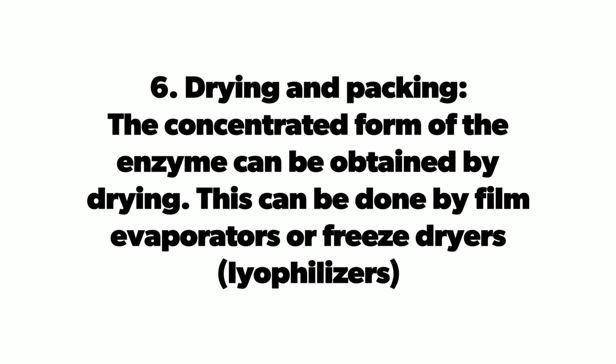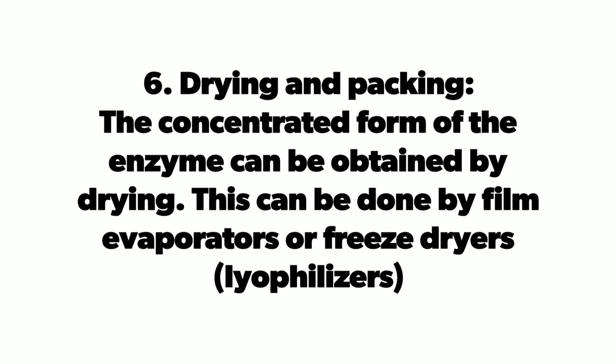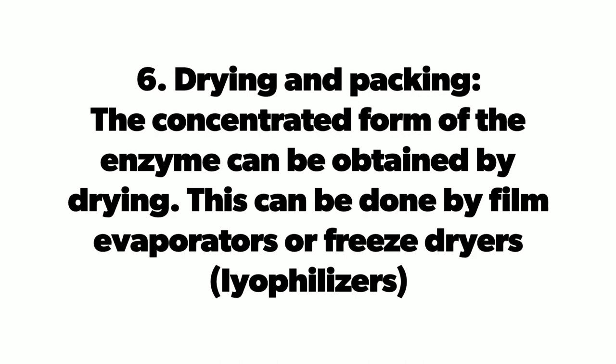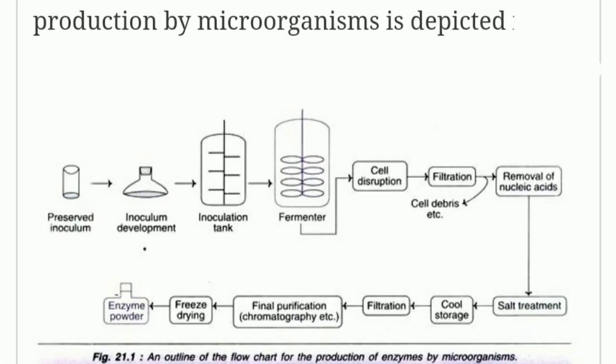Drying and packing: the concentrated form of the enzyme can be obtained by drying, using film evaporators or freeze dryers. This concludes the outline of production of enzymes.